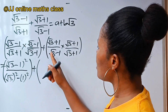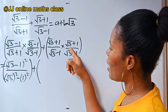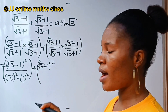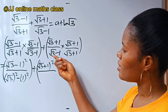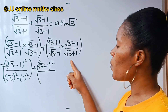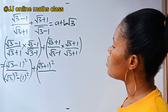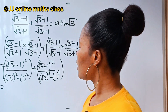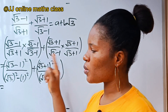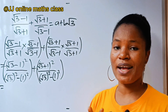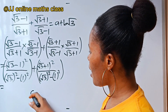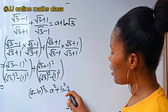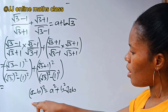Plus, for the second side: root 3 plus 1 multiplied by root 3 plus 1 is root 3 plus 1 squared, divided by root 3 squared minus 1 squared — also a difference of two squares with a equal to root 3 and b equal to 1. Now we expand root 3 minus 1 squared using the identity: a minus b squared equals a squared plus b squared minus 2ab.